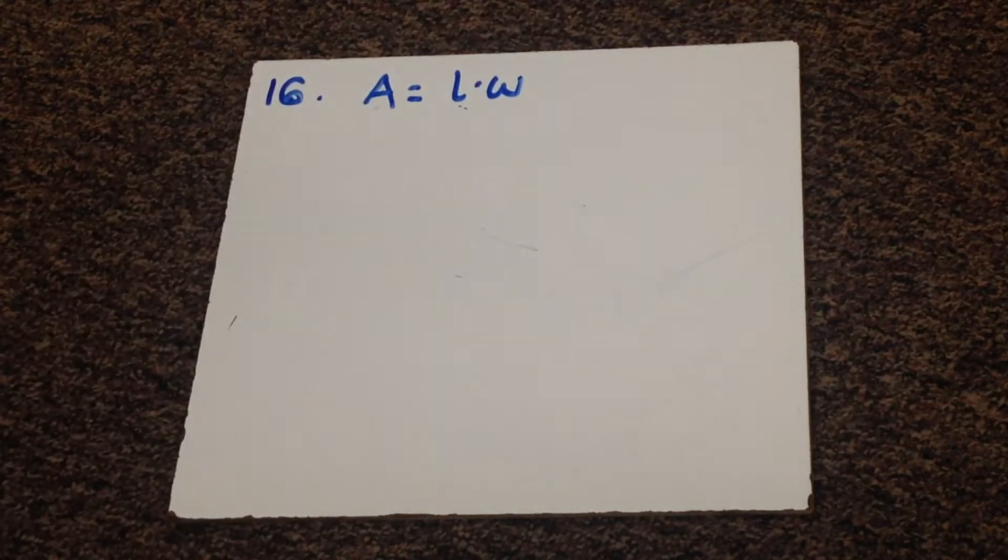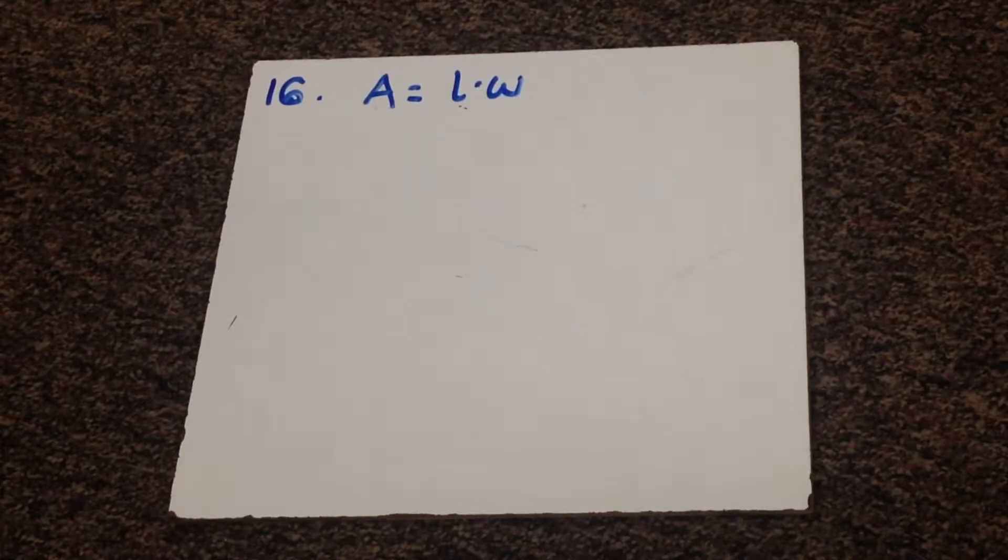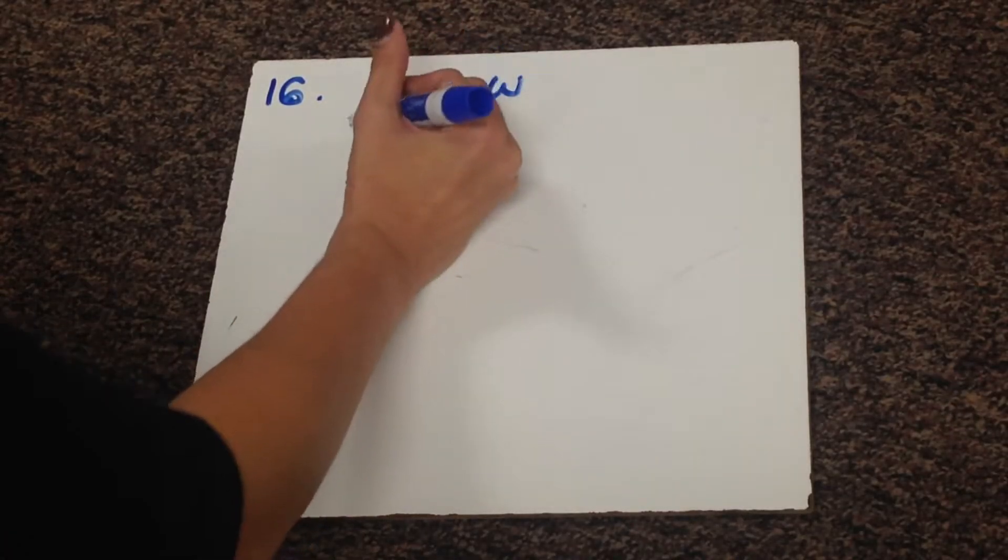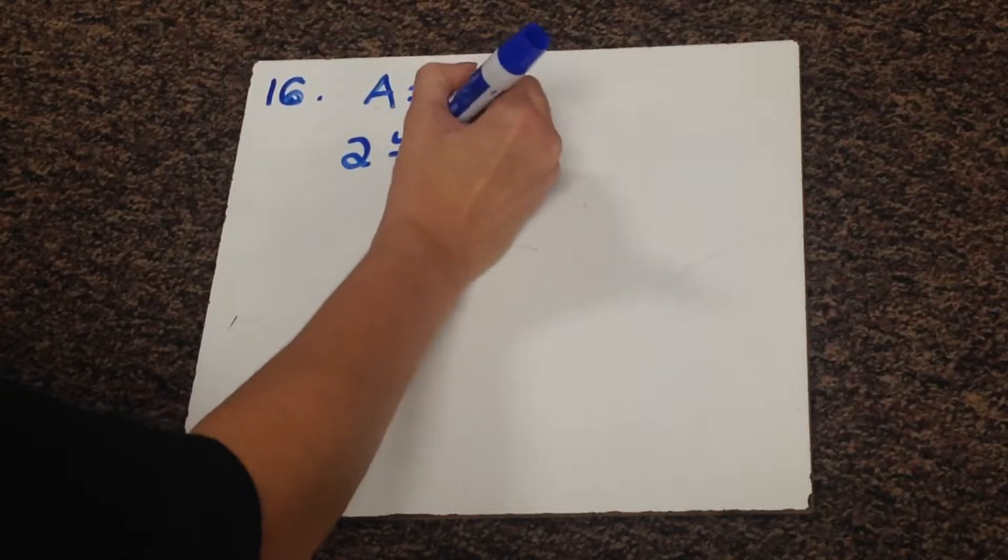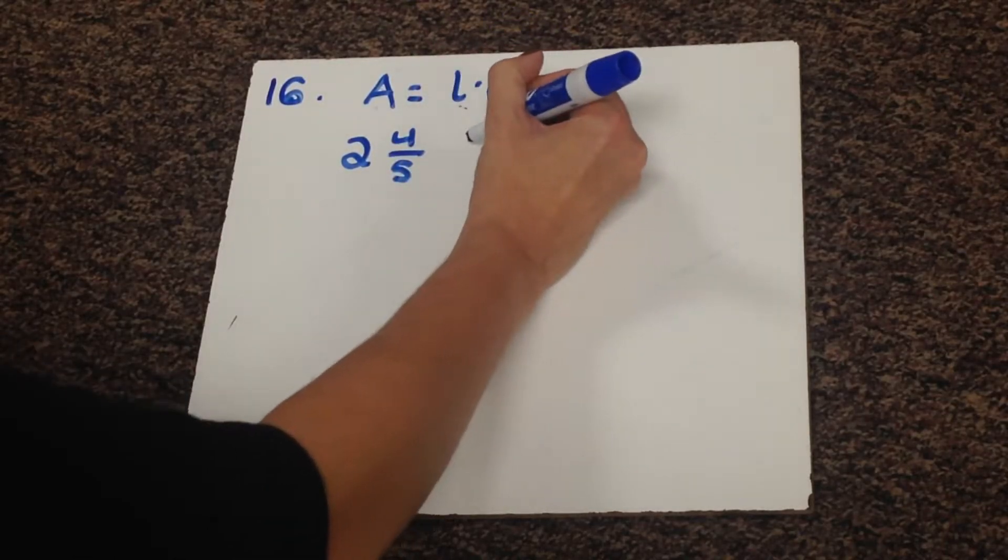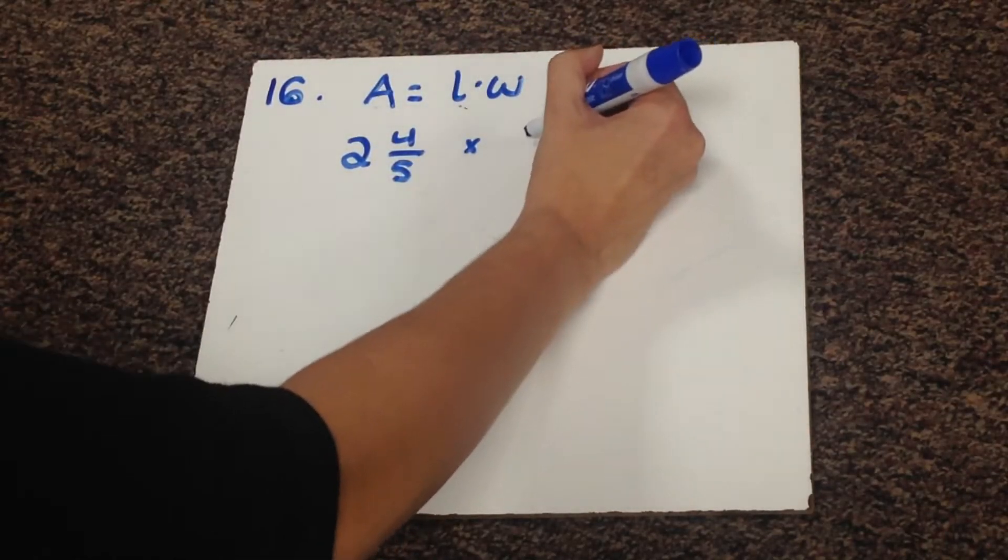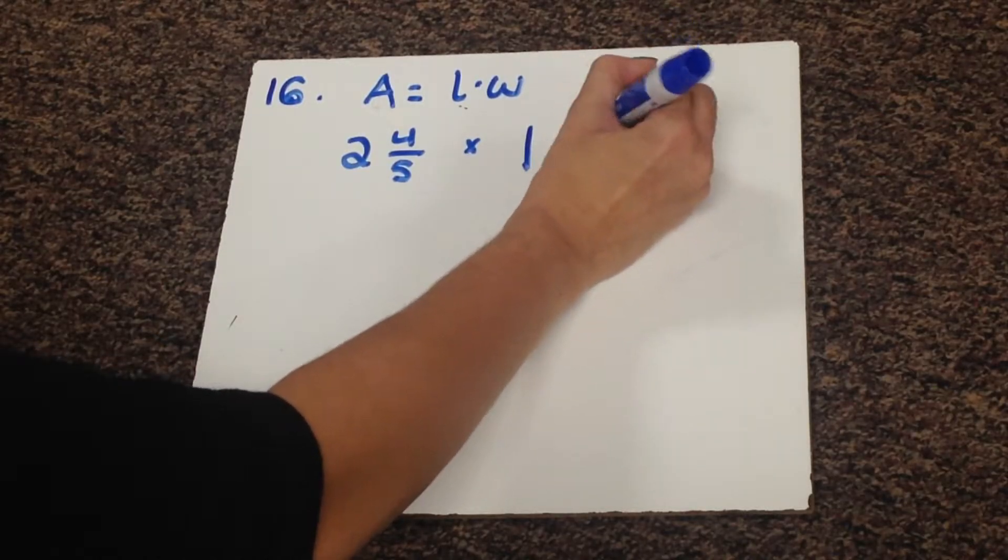The two pieces of information that we have in the story problem are 2 and 4/5 inches and 1 and 9/10 inches. So we're going to multiply those two numbers. We're going to take 2 and 4/5 and multiply it by 1 and 9/10.